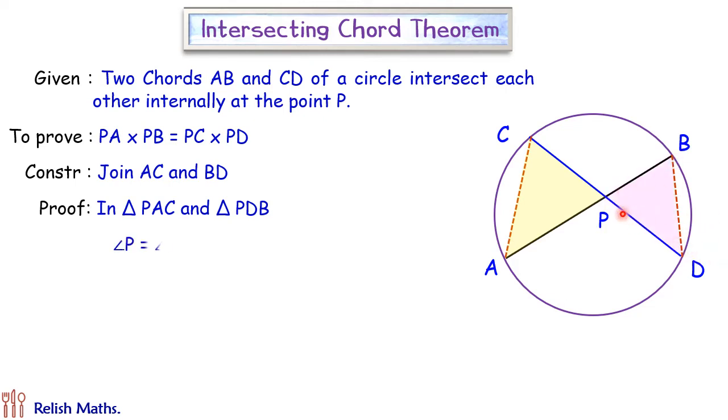In these two triangles, the angle P, these are vertically opposite angles, so they are equal to each other. Also, if we see, this AD is a chord which was hidden.